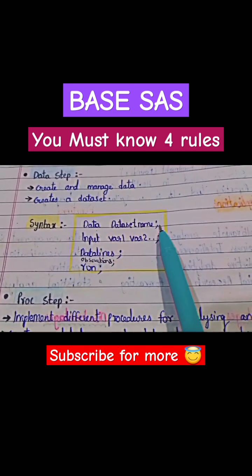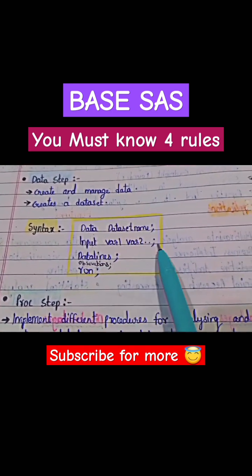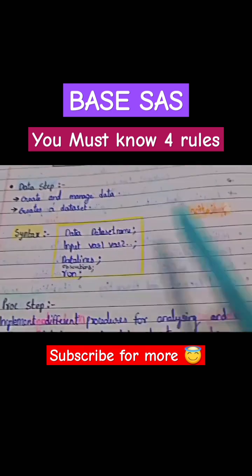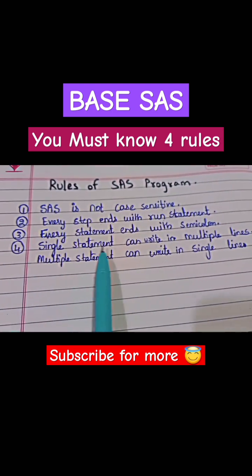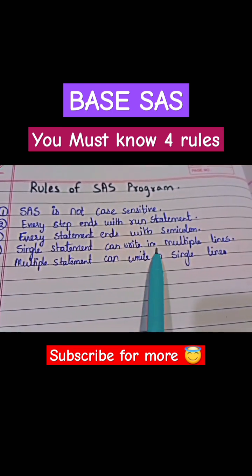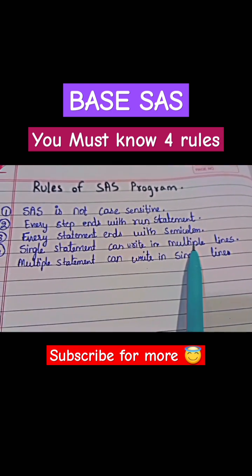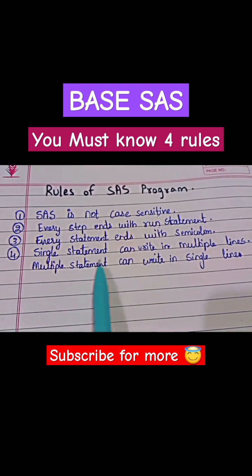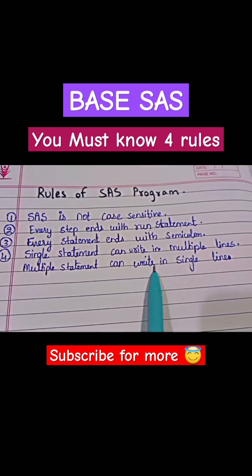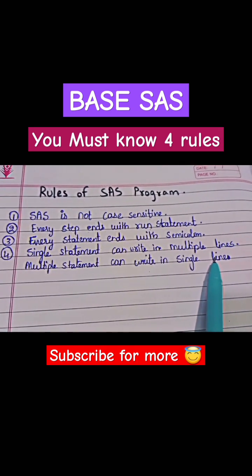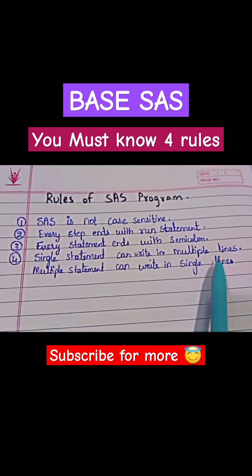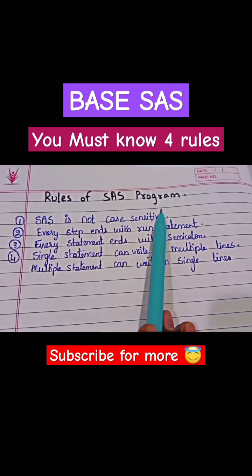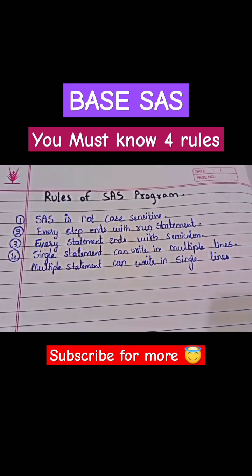Next, every statement ends with a semicolon — each and every statement must end with a semicolon. Finally, a single statement can be written across multiple lines, and multiple statements can be written on a single line. If you are liking my videos, please subscribe to my channel.